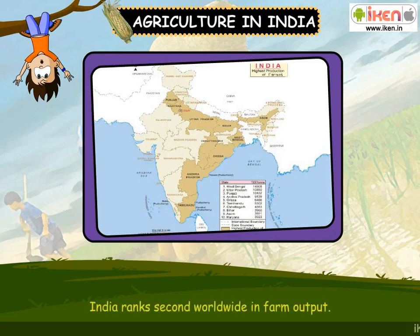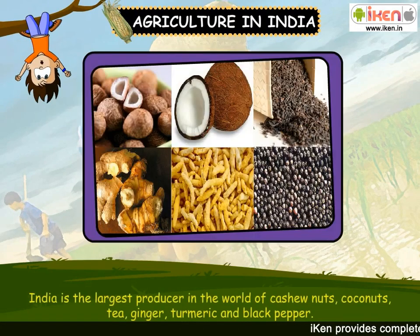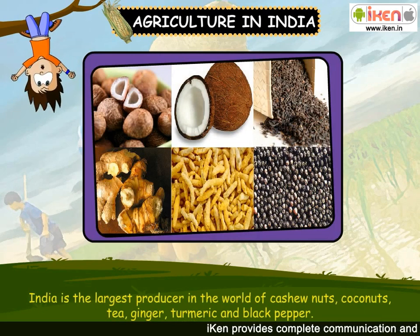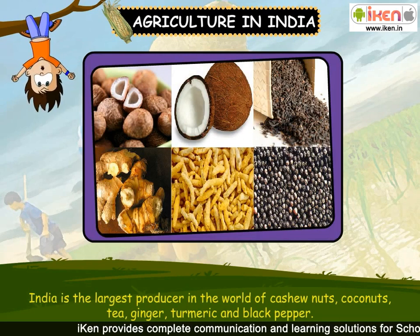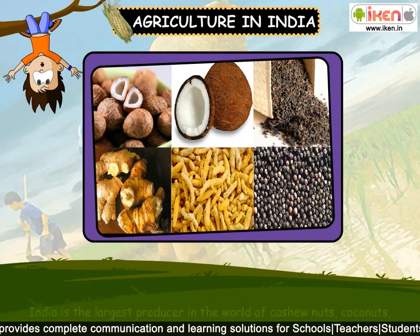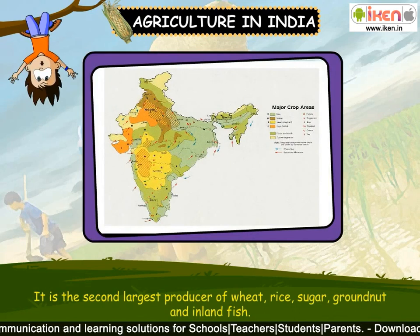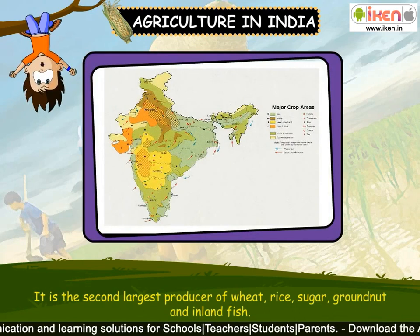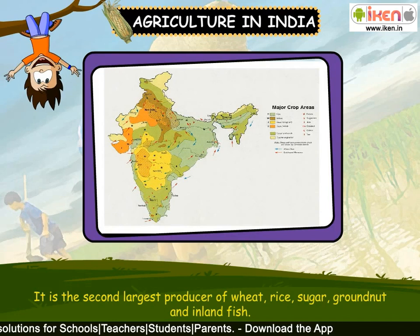India ranks second worldwide in farm output. India is the largest producer in the world of cashew nuts, coconuts, tea, ginger, turmeric and black pepper. It is the second largest producer of wheat, rice, sugar, groundnut and inland fish.